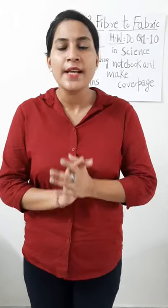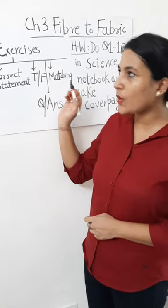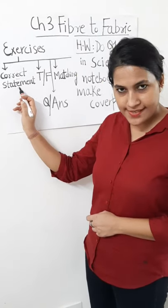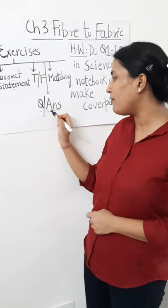Let's now start with today's session. As you have seen in my previous classes, we have covered chapter number 3, that is Fiber through Fabric, in which we completed the whole chapter. I also dictated you the keywords, explanation of the keywords, and roundup. After this we started with the exercises — multiple choice questions and fill in the blanks. In today's session, we are going to continue with the exercises and then question answers. In today's class we will cover: first, correct statements; second, true or false; third, matching; and after this, question answers.